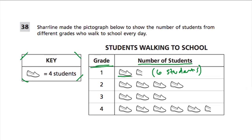Because one shoe is 4, and then half of 4 is 2, so 6 students. For 2nd grade, we have 4, 8, 12, 16 — so 16 2nd graders that walk.